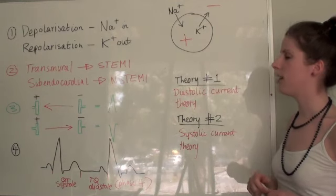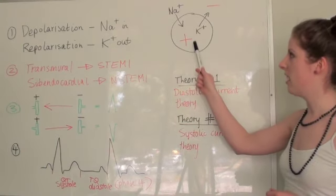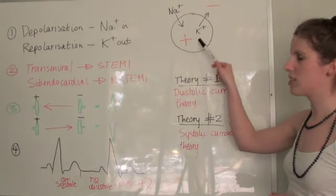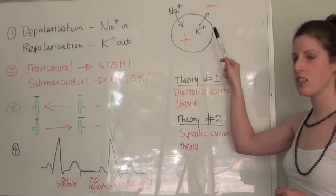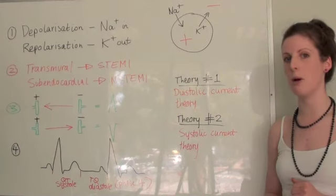So when a cell is depolarized, it has a mainly positive charge inside the cell and a mainly negative charge outside the cell. That's the first thing you need to remember.